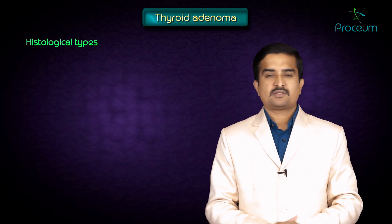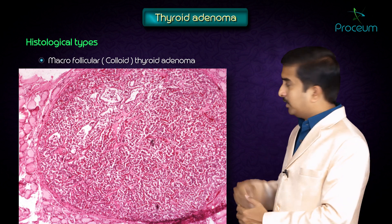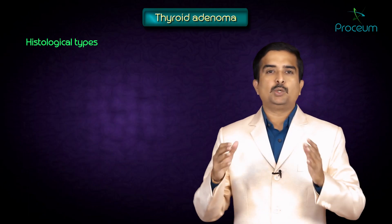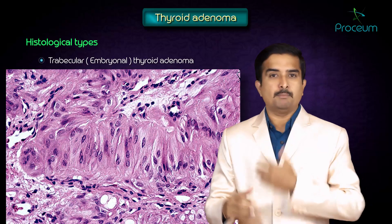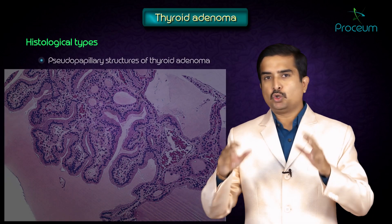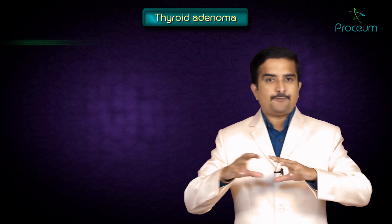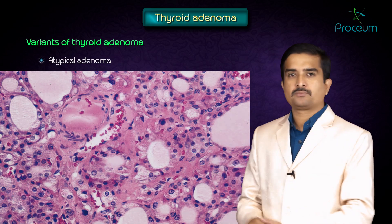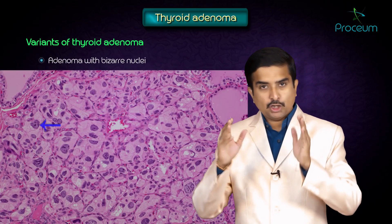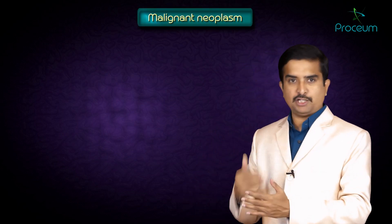The second histological type is the macro follicular, also called the colloid adenoma. The third is micro follicular, which is fetal. The fourth is trabecular, which is embryonal. The last is pseudo papillary structures. The different variants include Hurthle cell adenoma, atypical adenoma, hyalinizing trabecular adenoma, and adenoma with bizarre nuclei.